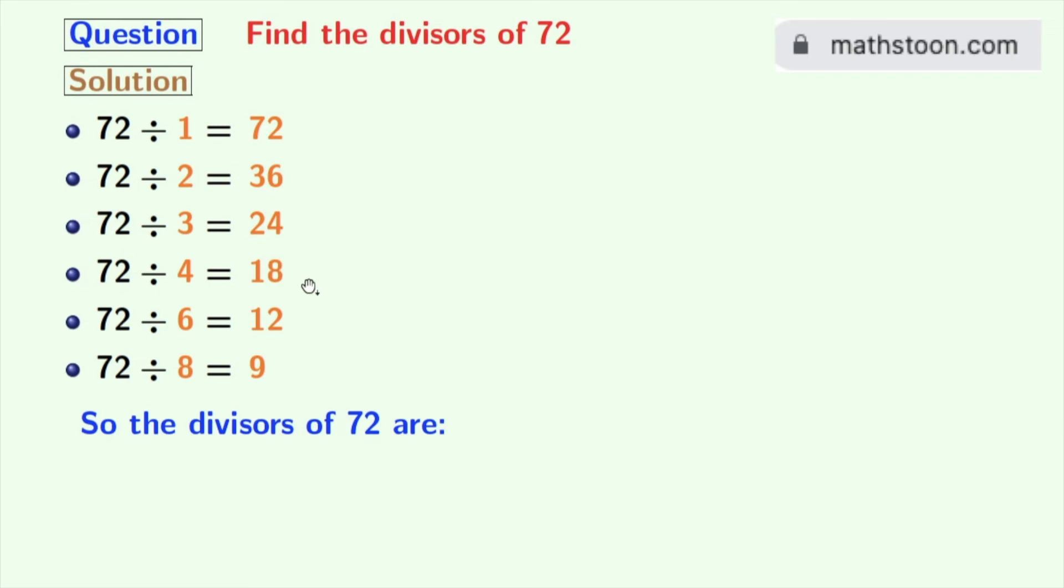These numbers are 1, 2, 3, 4, 6, 8, 9, 12, 18, 24, 36, and 72. So the total number of divisors of 72 is 12.